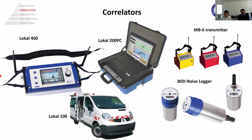These are the main products we offer for correlators. You see here the Local 400, Local 200 PC, which is our core correlator, our best performing correlator together with the Local 100. Local 100 is a built-in correlator, stationary, equipped inside water test vans, for example.